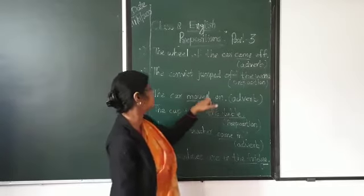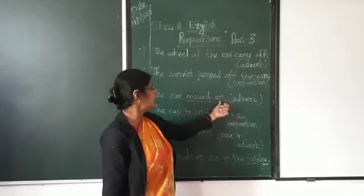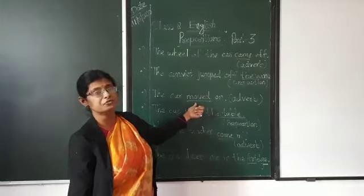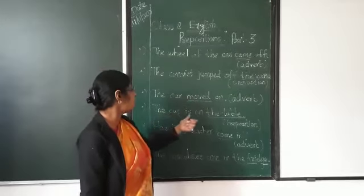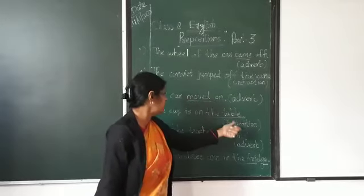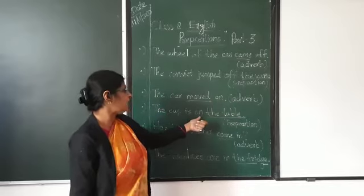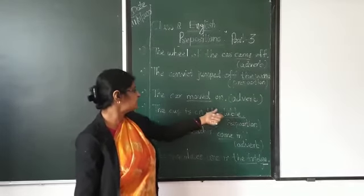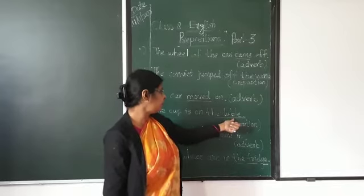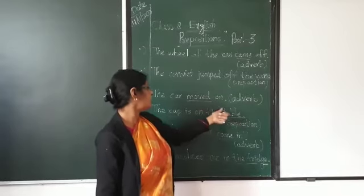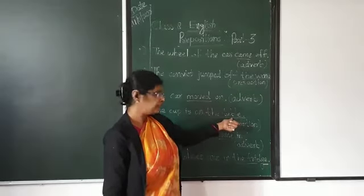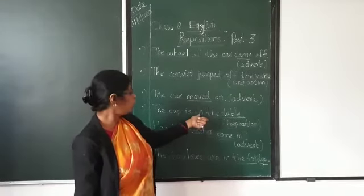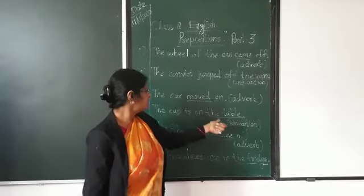Next. 'The car moved on.' Here 'on' is an adverb because it modifies the verb. Next: 'The purse on the table.' The same word 'on' acts as a preposition because it governs the noun 'table', or it has the object 'table' that follows the preposition 'on'.